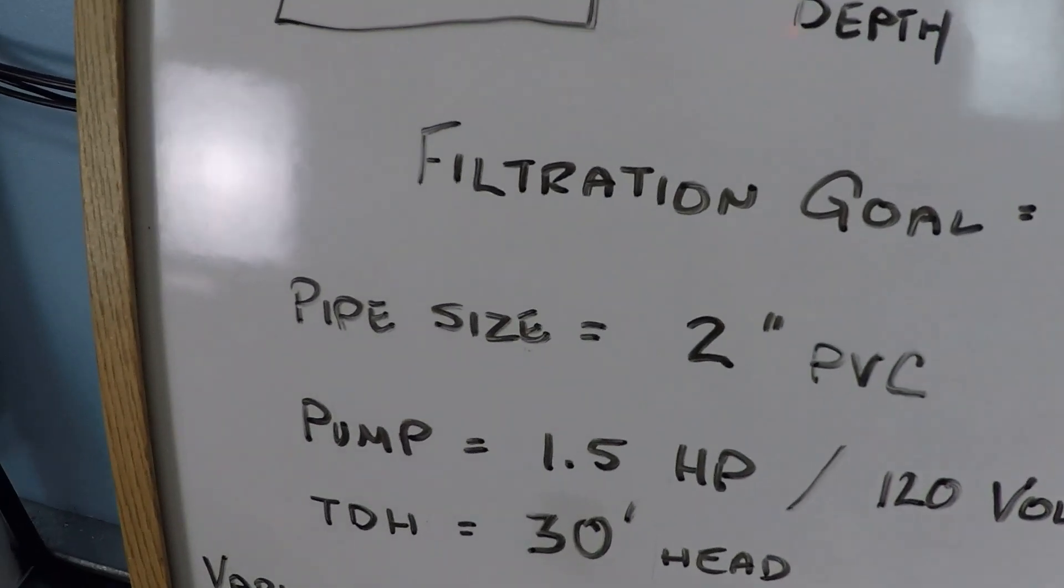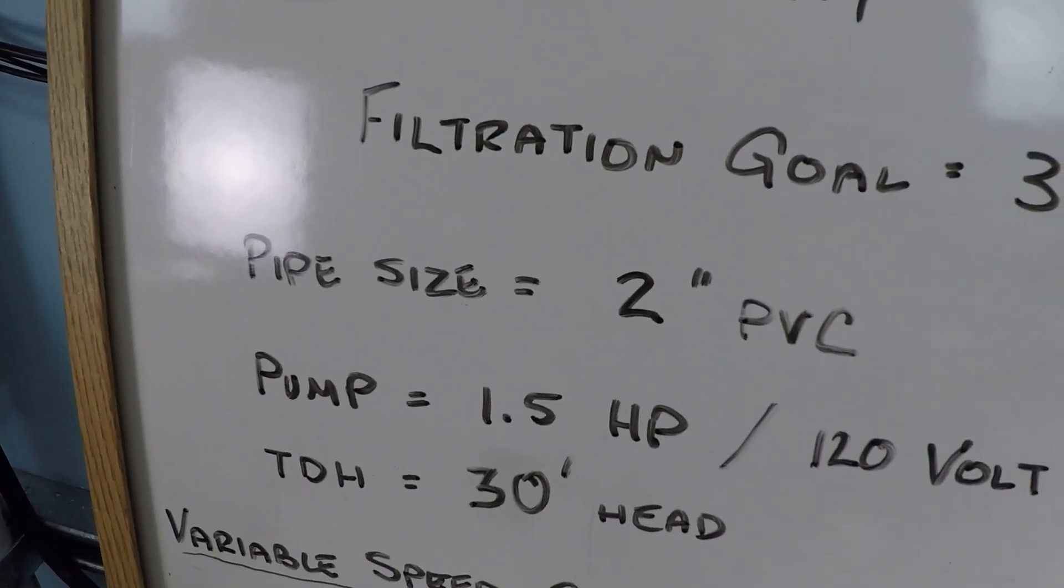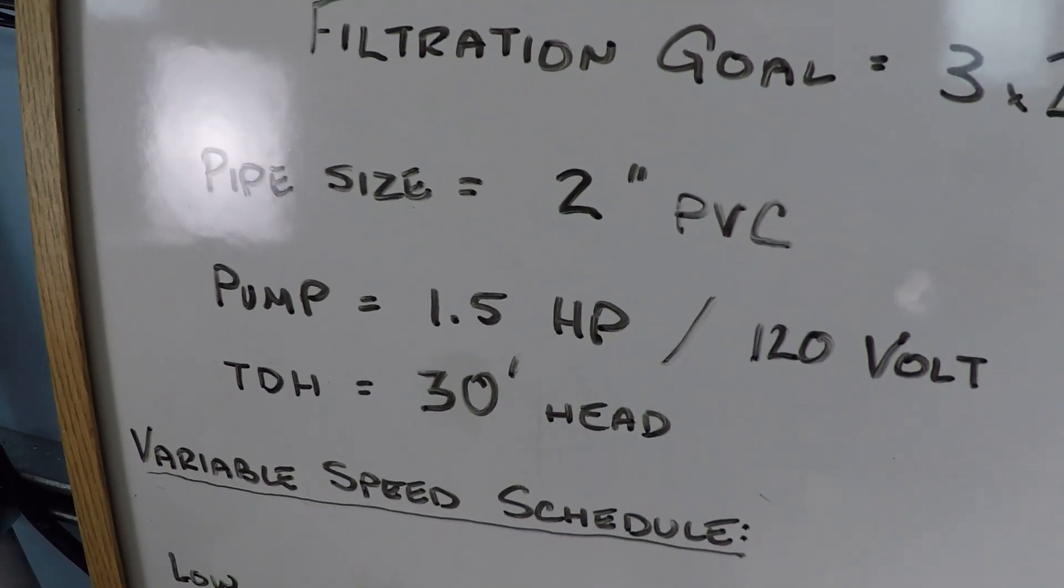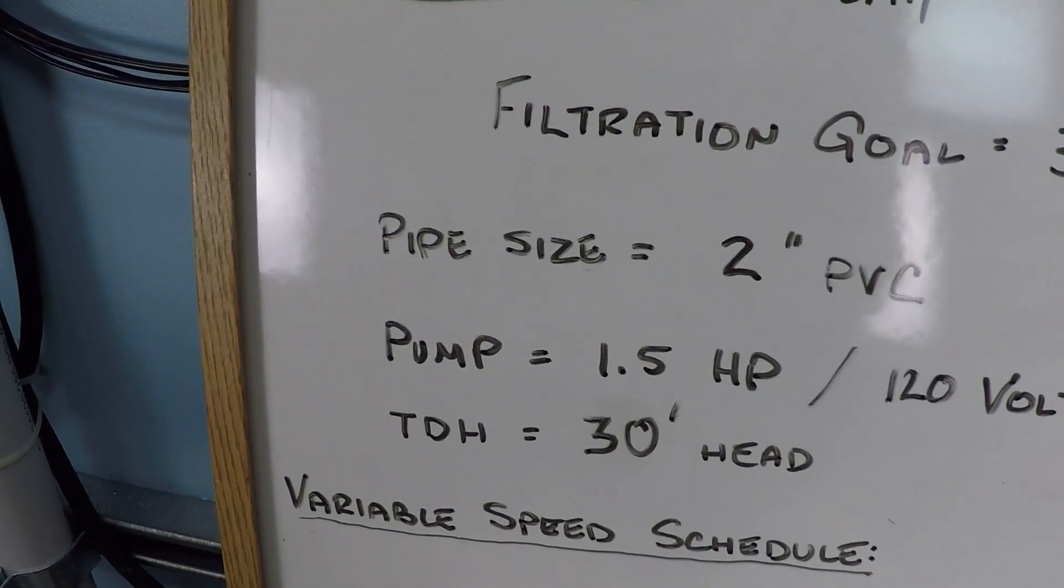The parameters we're looking at here is this system has 2-inch PVC, 1.5 horsepower variable speed pump, and the TDH is 30.